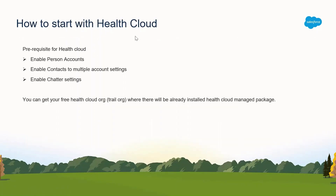To get started with Health Cloud as a beginner without paying, you can get a free trial org for 30 days. Search on the internet for a free trial org of Health Cloud, fill the form, and you will receive an email to verify and start using your Health Cloud org free for 30 days. If you want to buy the license and install the Health Cloud managed package in an existing org, you need to enable person accounts, enable contacts to multiple account settings, and enable chatter settings. Thank you so much.